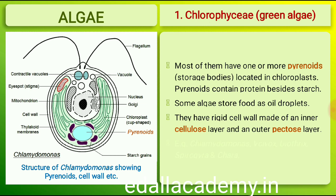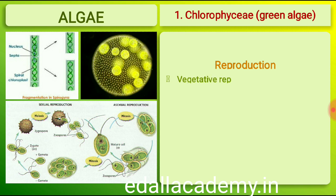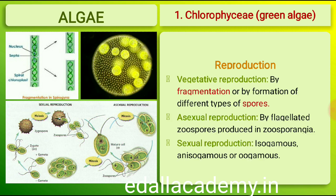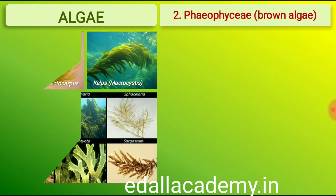Some algae may store food in the form of oil droplets. Green algae usually have a rigid cell wall made of an inner layer of cellulose and an outer layer of pectose. Vegetative reproduction usually takes place by fragmentation or by formation of different types of spores. Asexual reproduction is by biflagellated zoospores produced in zoosporangia. Sexual reproduction may be isogamous, anisogamous or oogamous. Some commonly found green algae are Chlamydomonas, Volvox, Ulothrix, Spirogyra and Chara.